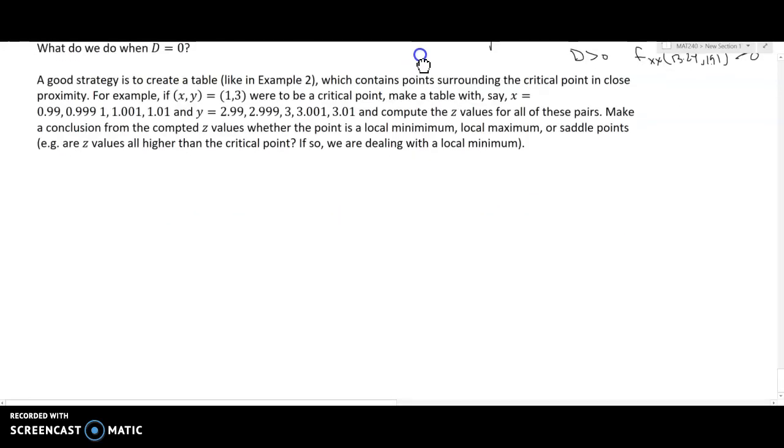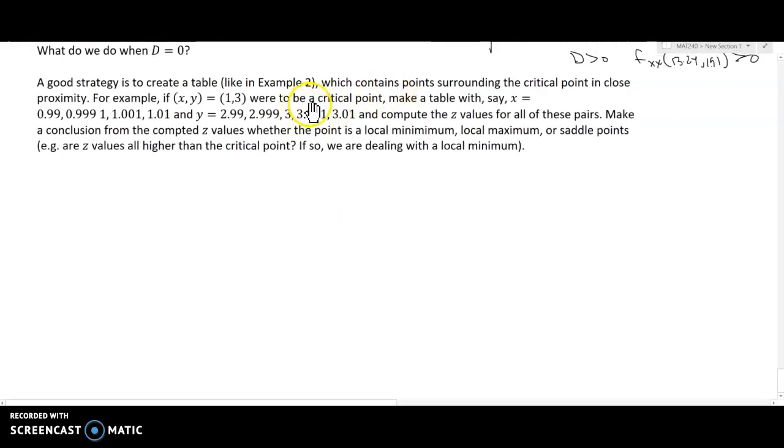So one last question that we want to address here is what do we do when D equals 0? Well, a good strategy is to create a table, like in example 2, which contains points surrounding the critical point in close proximity. For example, if (x,y) equals (1,3) were to be a critical point, make a table with, say, x equals 0.99 all the way to 1.01, y is 2.99 all the way to 3.01, and compute the z values for all of these pairs. Make a conclusion from the z values, whether the point is a local minimum, local maximum, or saddle points.